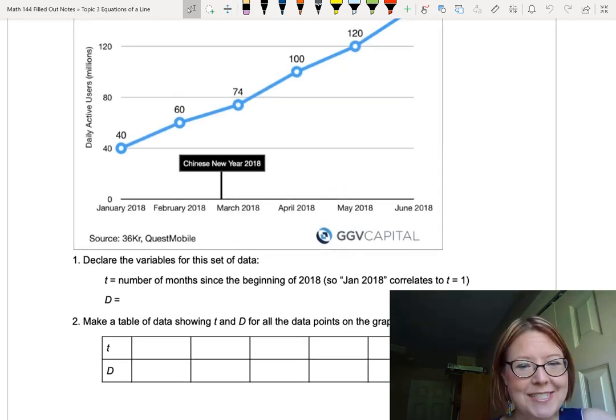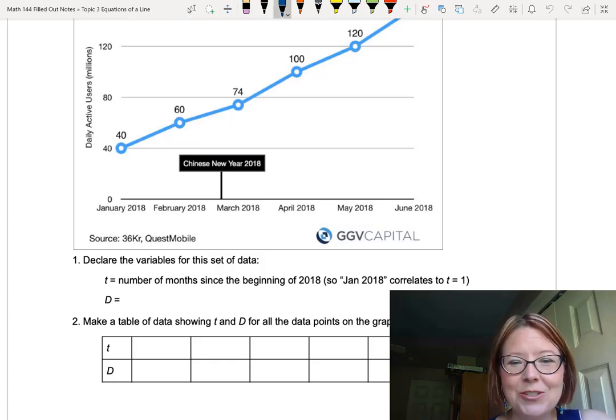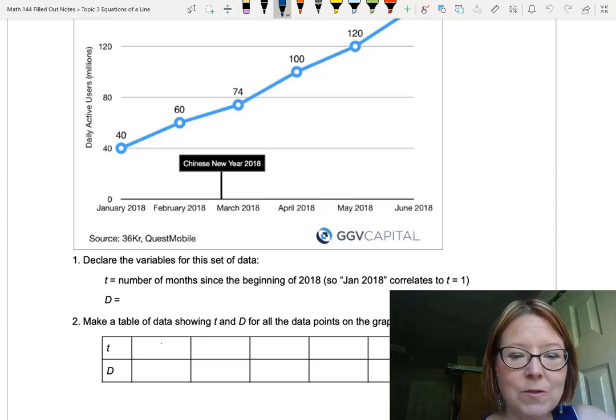The first thing we're going to do is declare the variables for this set of data, and it's kind of awkward to count the axis in month and year. So we're going to let t be the number of months since the beginning of 2018. January of 2018 is going to correspond to t equals one.